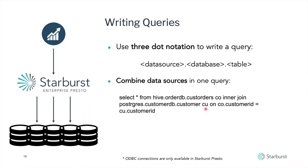Once you start a query, you actually have a three-dot notation. It includes data source, database, and table. In the case of Postgres, the middle dot is the schema — I like to call it the namespace. So you would have the server name, the schema, and then the table name. And you can combine data sources in one table and one query, which we'll also be doing in a little bit.